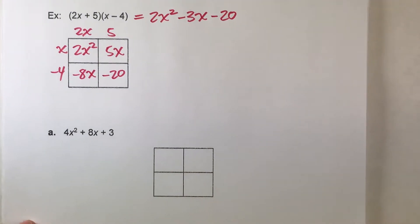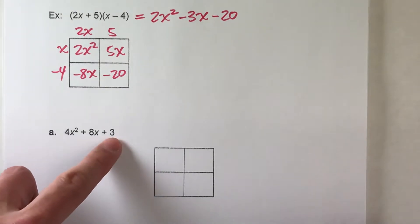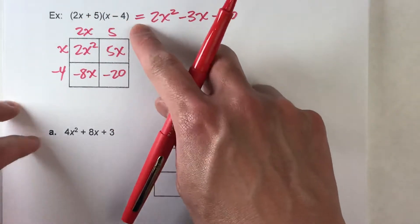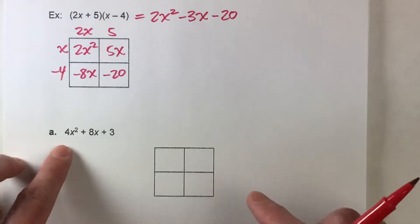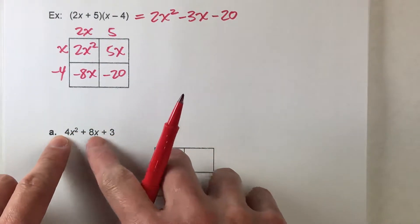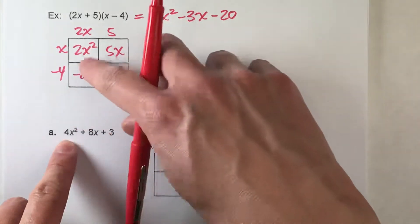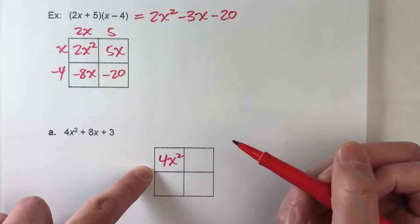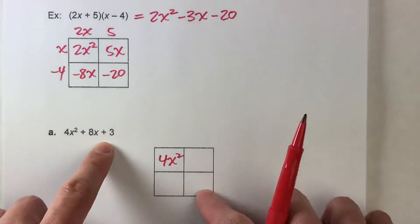So let's do an example here. We've got 4x squared plus 8x plus 3. We want to get this into factored form. And we're going to use the area model to do that. So first thing we're going to do is start putting all these terms into the boxes. And like I said before, the x squared term goes right here.